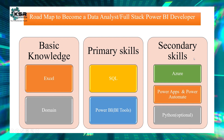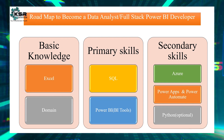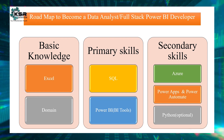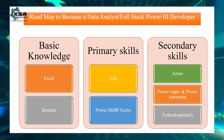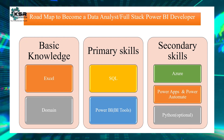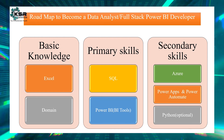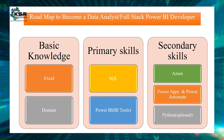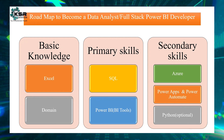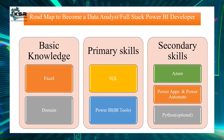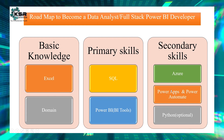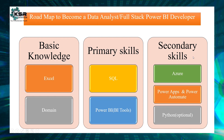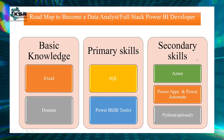Coming to the secondary skills — if you have these skills, it's an added advantage for you. You will get more projects, more interview calls, as well as a higher package. On average, you will get a minimum of 20 lakhs per annum with the primary skills, and if you add the secondary skills, you will get more than 20 lakhs per annum.